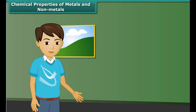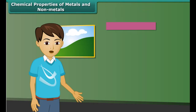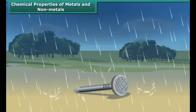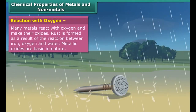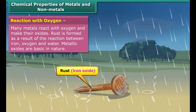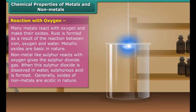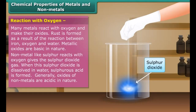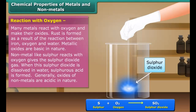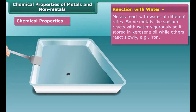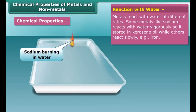After discussing physical properties, let's know about the chemical properties. Metals like iron, copper, and magnesium react with oxygen and form their oxides, which are basic in nature. Non-metals also react with oxygen: for example, sulfur reacts with oxygen to produce sulfur dioxide gas. Oxides of non-metals are acidic in nature.